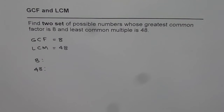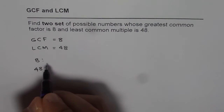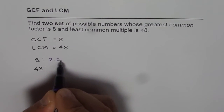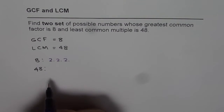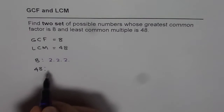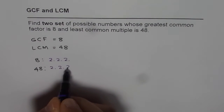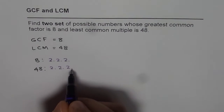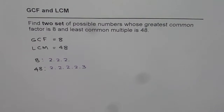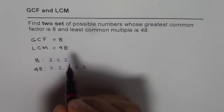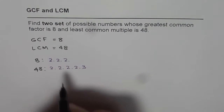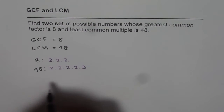Well, you can check it. If I write the factors of 8, factors of 8 are 2 times 2 times 2. As far as factors of 48 is concerned, 48 is 6 times 8. So 6 times 8 means 8 gives you three 2s and 6 gives you 2 times 3. So that is how we get the factors, and from here you can see what the LCM and greatest common factor will be. Let me show you with the help of a Venn diagram to understand it better.